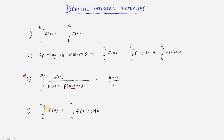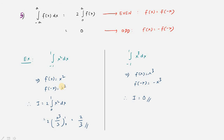The last property is: if you have integral 0 to a of f(x) dx, then it can be written as integral 0 to a of f(a−x) dx. This is again a very powerful property and I will show you its application.